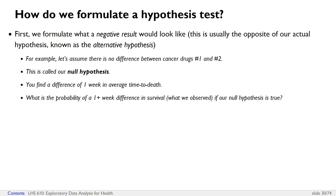So based on our sample of data, what's the chance that we would find a one-week or more difference in survival in that data set, and yet the population still has really no true difference between cancer drugs one and two? What is the probability that we find this one-week difference in survival by chance alone?